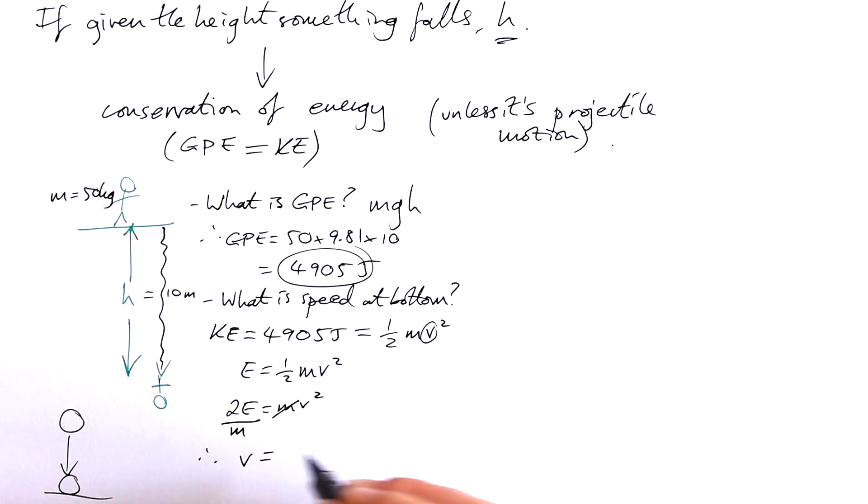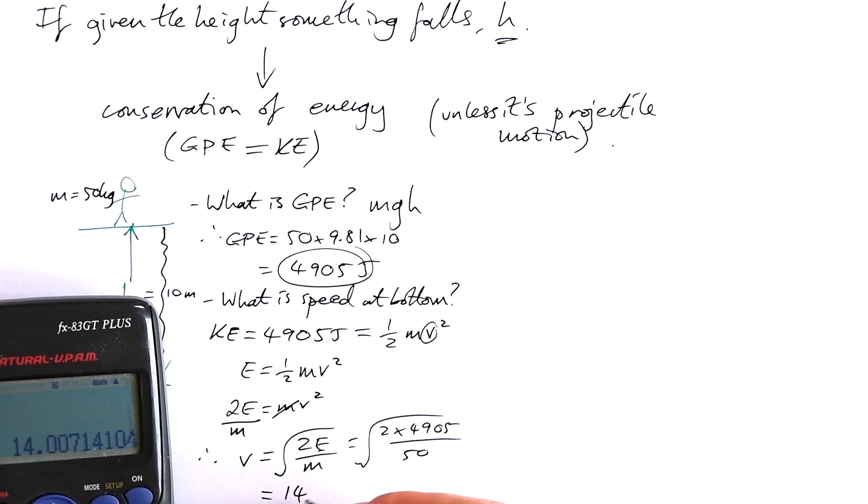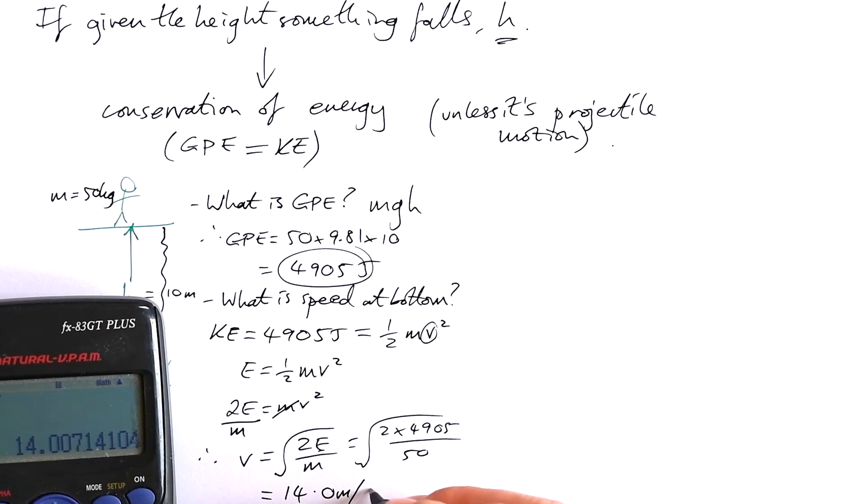Therefore V by itself is going to be equal to the square root of two lots of the energy divided by the mass. So it's going to be two times that 4905 divided by 50, and that gives me 14.0 meters per second.